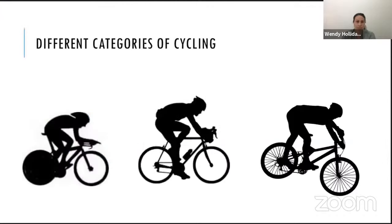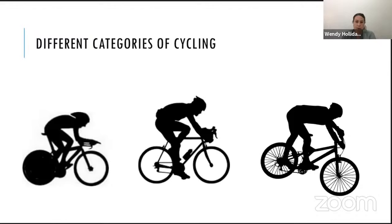There are different categories of cycling and every discipline has different demands. If we look at time trial, aerodynamics is a huge factor — that's a talk on its own. Most common would be road cycling, either for commuting or for sport and racing. Then there's mountain biking, with characteristics such as cross country and marathon racing. For the purpose of today's talk, we'll be discussing road cycling as a competitive sport.